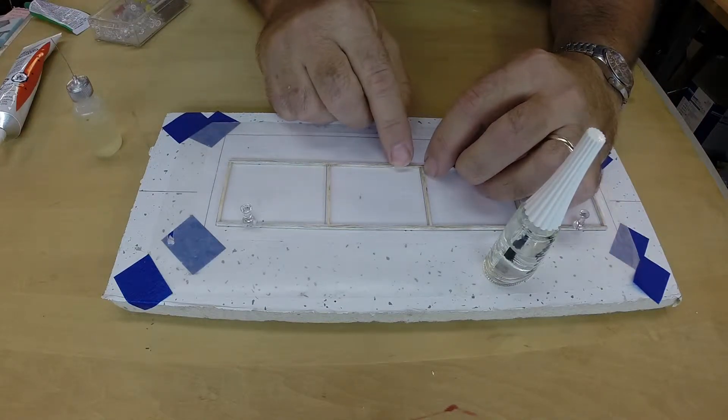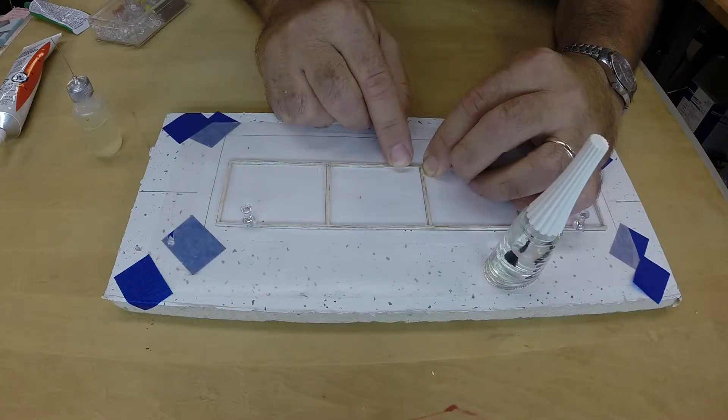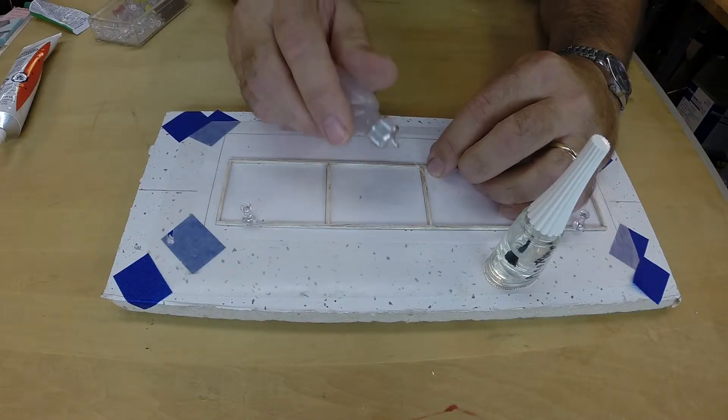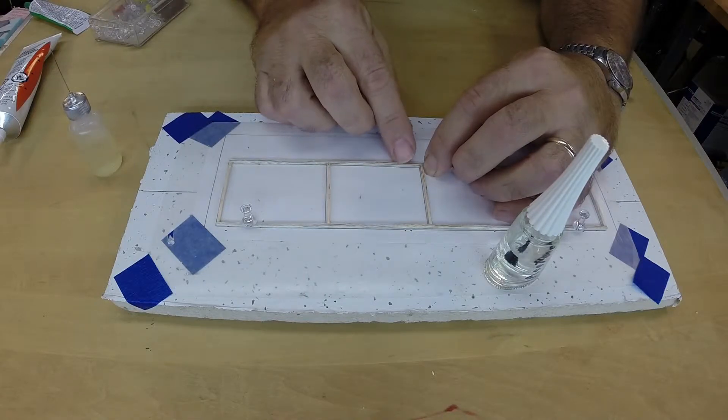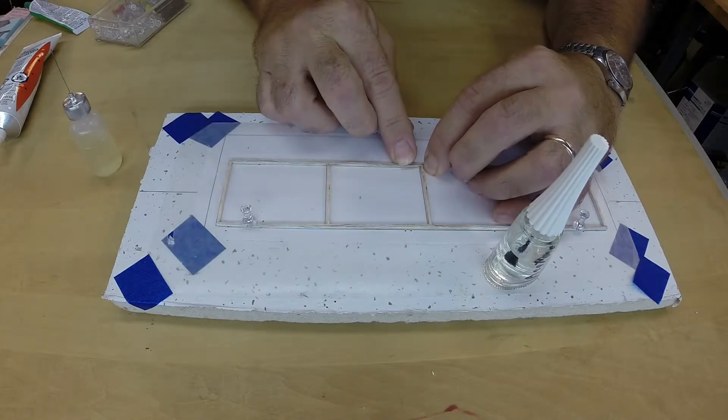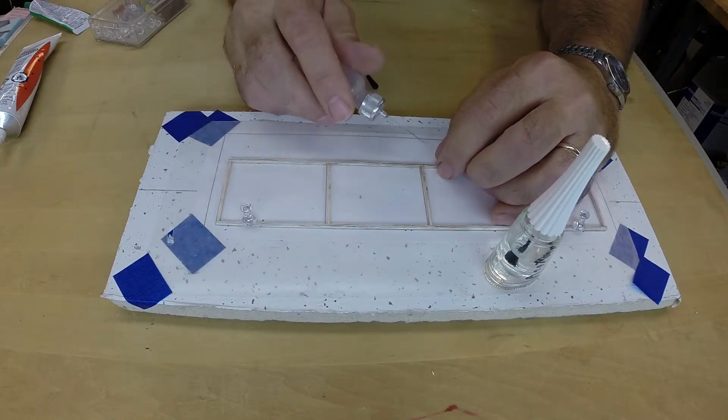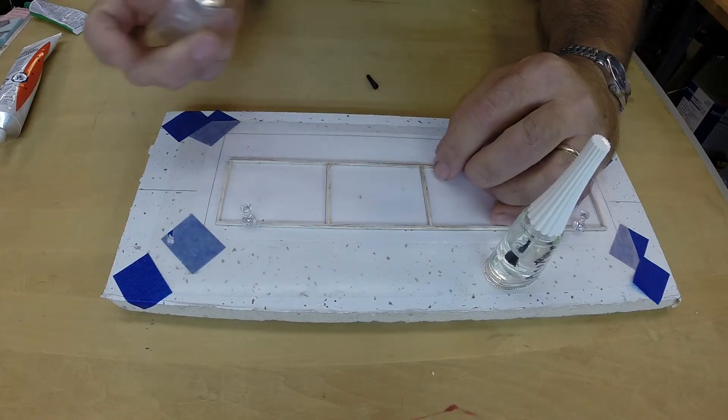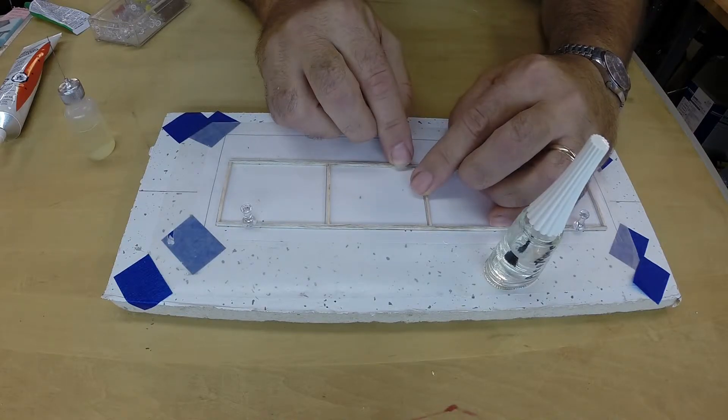To unglue a part or structure, apply acetone to the bond. You can use a paint brush, the brush in the cap of a nail polish bottle, or a cotton swab on a wood or paper stick. Acetone evaporates quickly so multiple applications will probably be needed to soften the glued joint. Apply only enough acetone to the desired area to keep it from softening other glued areas. Test the bond occasionally, and you will feel the joint become flexible prior to being able to separate the parts.